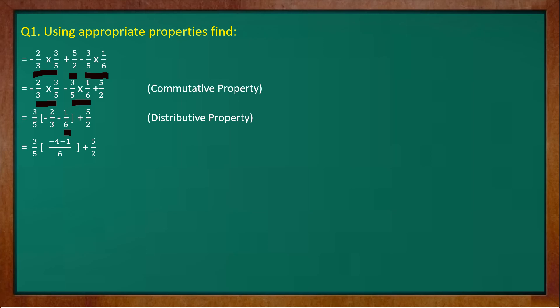6 divided with 6 that is 1 multiplied with the numerator minus 1 will give you minus 1 and 5 by 2 will remain same as 5 by 2. Now this bracket part minus 4 minus 1 upon 6, here we have to use integers to solve this.